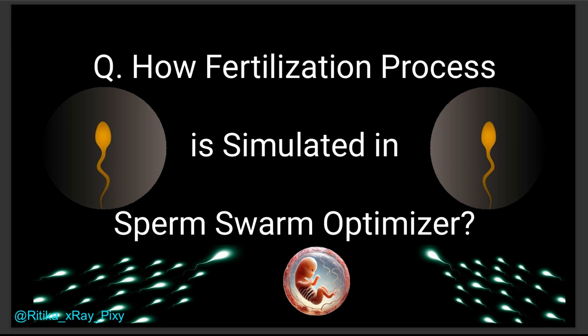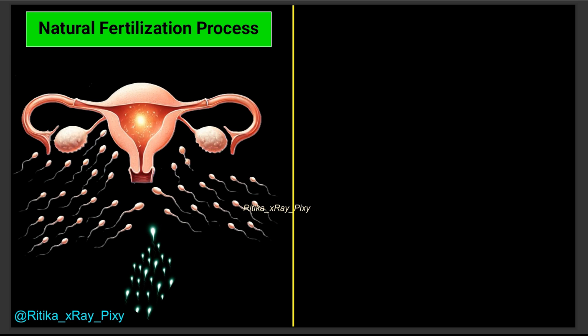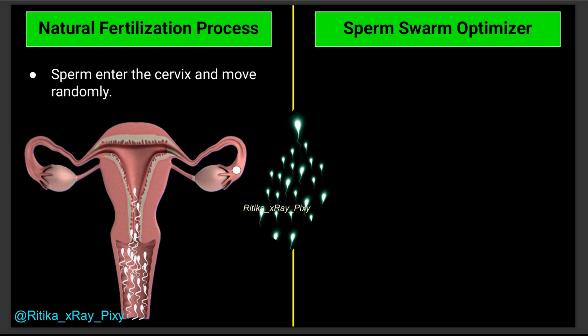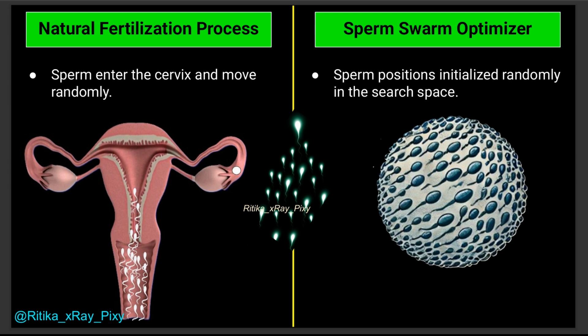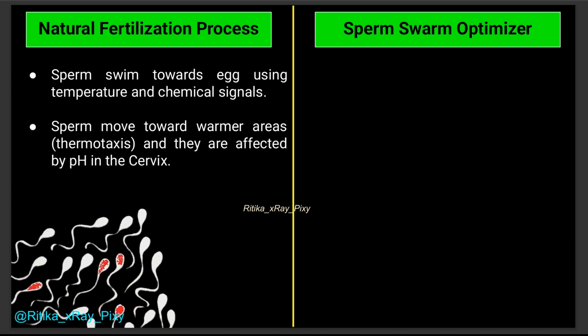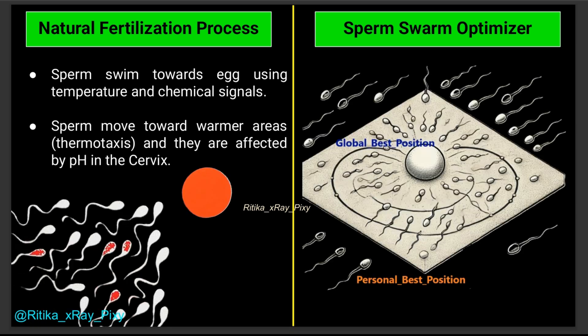Now we will understand how this natural fertilization process is simulated in the optimizer. In natural fertilization, sperm start at random positions in the search space — the female reproductive system is the search space. In this optimizer, each sperm is a candidate solution, and we randomly initialize N sperms within the multi-dimensional search space. In natural fertilization, sperm fitness is determined by how close it is to the egg; in the optimizer, solutions move toward optimal areas based on personal best and global best position.